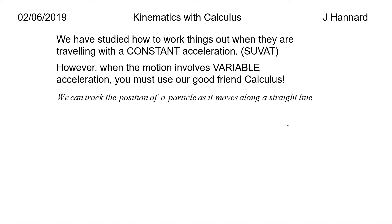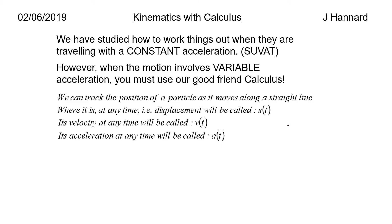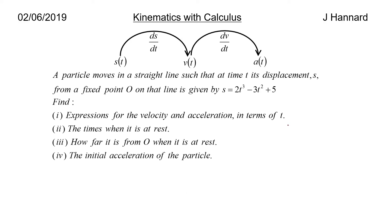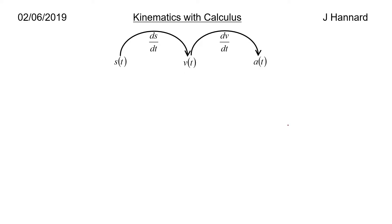We can track the position of a particle as it moves along a straight line. Where it is at any time, i.e. the displacement, will be called s, its velocity at any time will be called v, and its acceleration at any time will be called a. Because if you think about it, these things are all going to vary as time goes on, so these need to be functions of t. There's two key relationships you need to be aware of: s differentiates to v, which differentiates to a. So ds/dt is v and dv/dt is a.